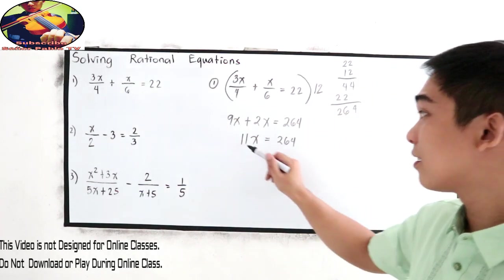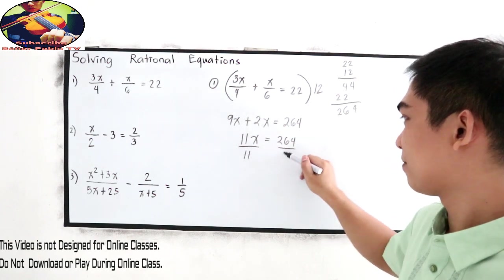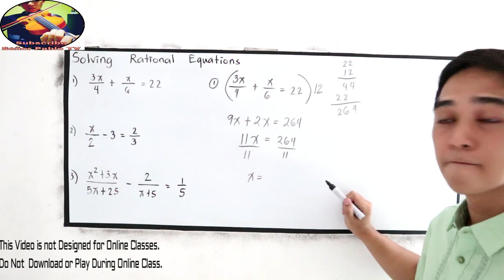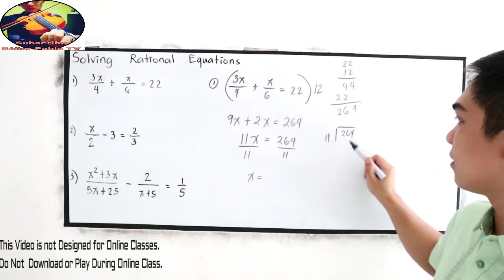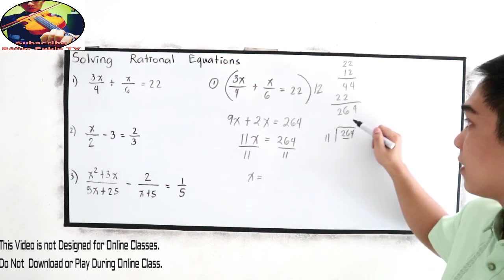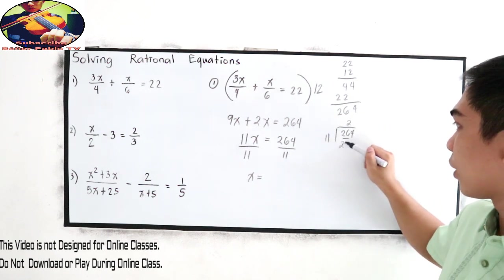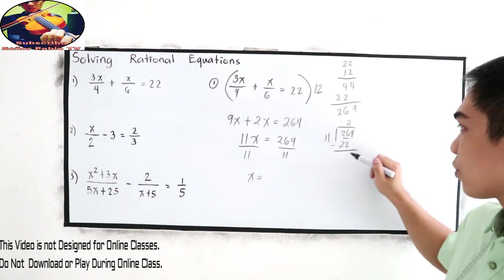Define x, divide by 11. So x is equal to 264 divided by 11. 26 divided by 11, that is 2. 2 times 11, 22. Subtract.